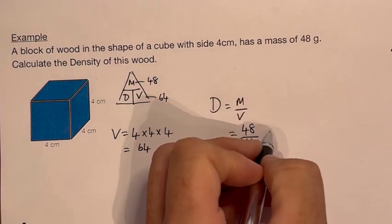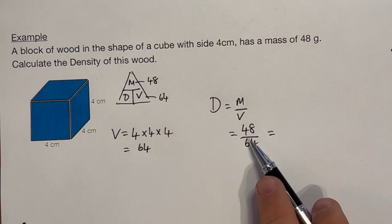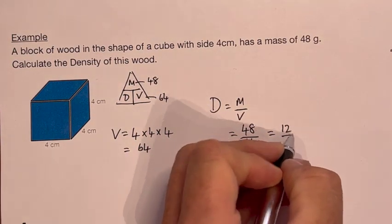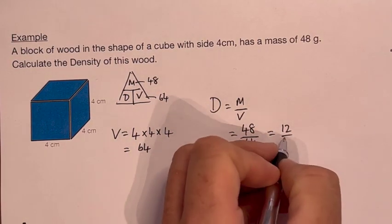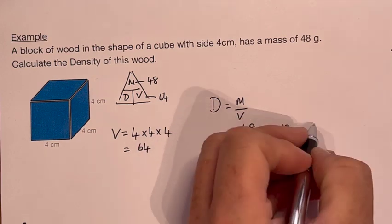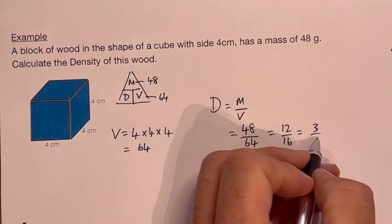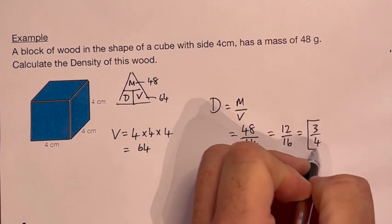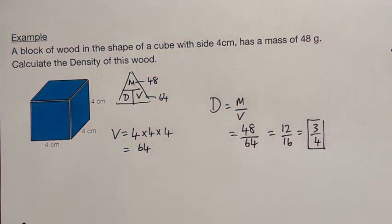And then we simplify. So we know that four goes into that 12 times, and we all know that four goes into that 16 times. However, I can cancel that down further because four goes into that three times and four goes into that four times. So the density is three quarters or 0.75.